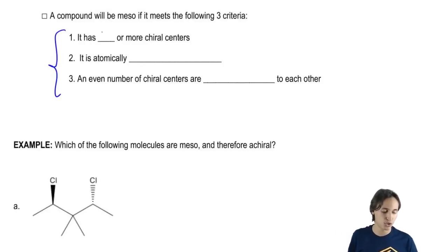First of all, it has to have two or more chiral centers. It can't have less than two. So if it has one, it's not meso. If it has two, maybe it's meso, three, maybe it's meso—two or more.